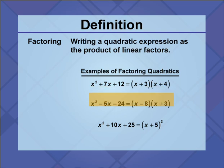The quadratic trinomial x squared minus 5x minus 24 can be factored as the product of two linear binomials x minus 8 and x plus 3.